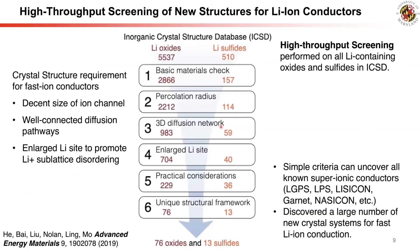Using these quantified crystal structure features, we perform a high-throughput screening of lithium superionic conductors using structures from the ICSD. By screening for percolation radius, lithium diffusion network, and enlarged lithium sites, we identified 76 oxides and 13 sulfides. Among them are known superionic conductors — LGPS, Garnet, NASICON, and LISICON — and we also discovered many new structures as potential fast ion conductors.